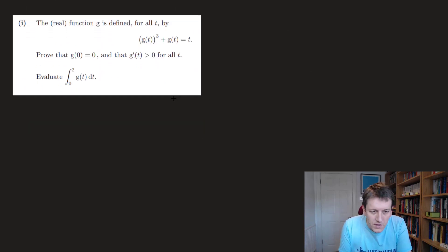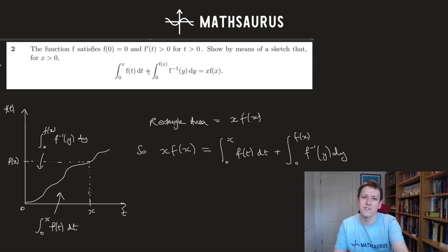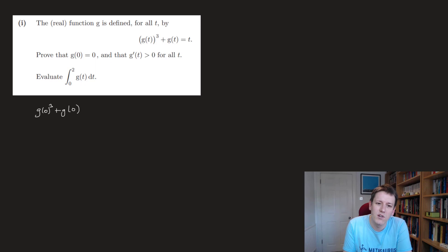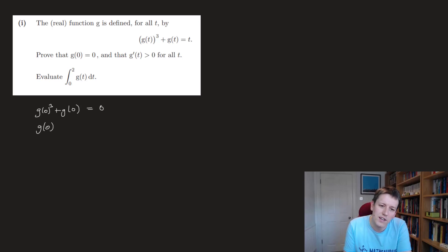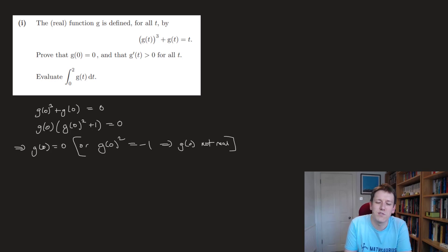The real function g is defined for all t by g(t)³ + g(t) = t. We want to show that g(0)=0 and g'(t) > 0 — i.e. it satisfies the same conditions as before. For g(0): substituting t=0 gives g(0)³ + g(0) = 0. Factorising: g(0)(g(0)² + 1) = 0, so either g(0)=0 or g(0)² = −1. The second would mean g(0) is not real, and we're told g is a real function. So g(0) = 0 as required.